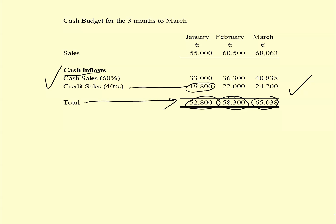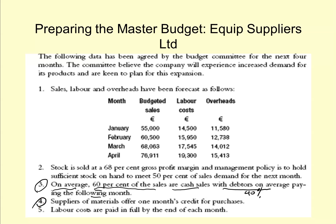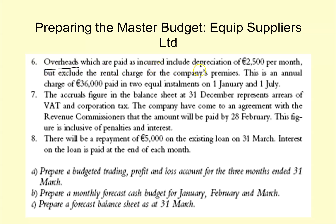One area we worked out was purchases, done in the income statement. We did three separate trading accounts for January, February and March specifically to calculate the purchase figures, since we weren't given them directly. Note number four states that suppliers of materials offer one month's credit for purchases. We also have labour costs, overheads - noting that depreciation of 2,500 per month is included - then rent, and note number seven covers payment of arrears and tax.